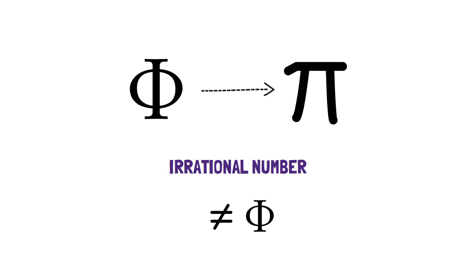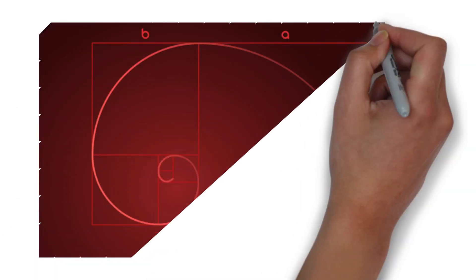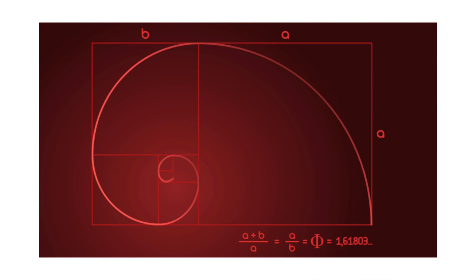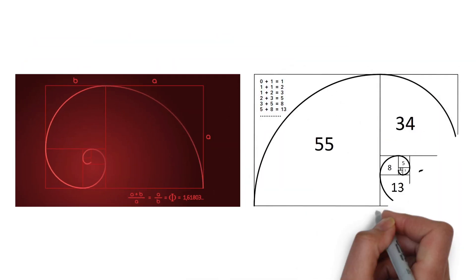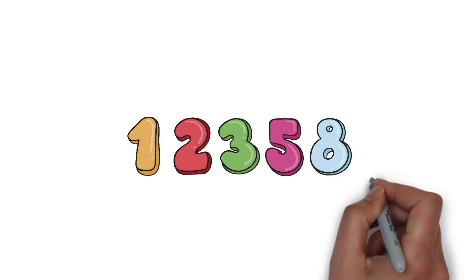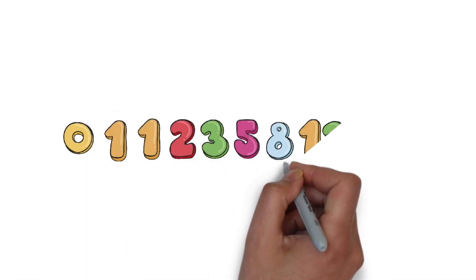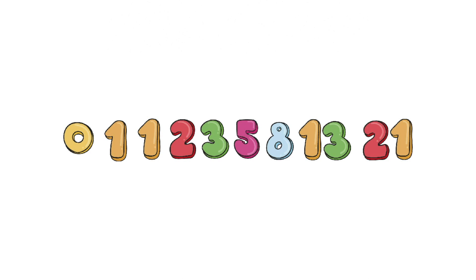There is no equal fraction for phi and its decimal keeps going and never stops. To understand how to use the golden ratio in design, you need to understand the main principles behind it. There is a close relationship between the golden ratio and the Fibonacci sequence. The Fibonacci sequence is a naturally occurring sequence whereby each number is the sum of the two previous numbers — for example: 1, 1, 2, 3, 5, 8, and so on.